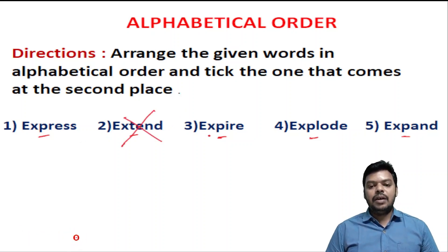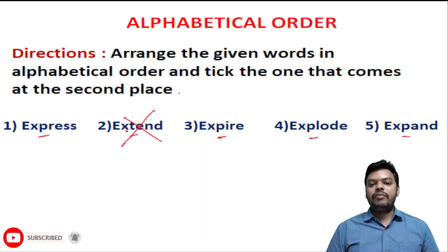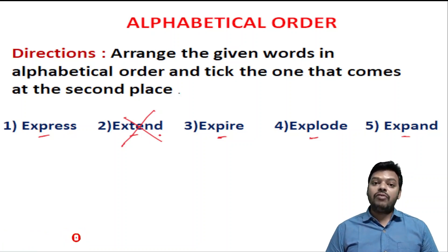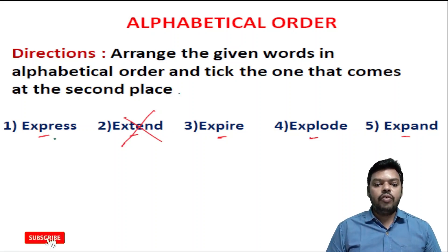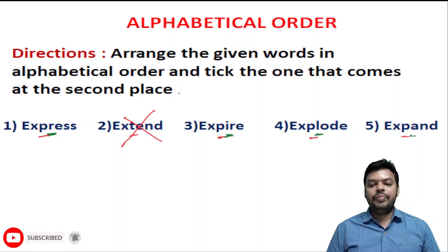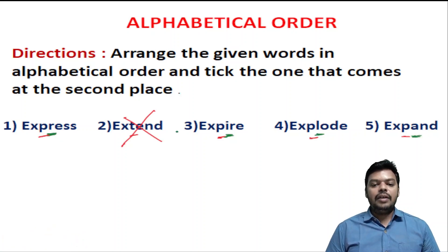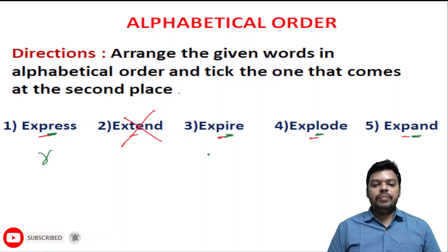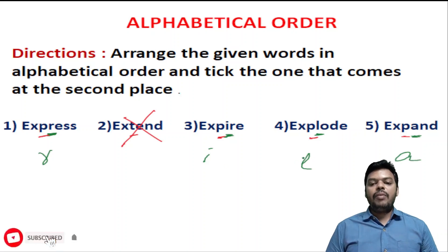The words are: expire, explode, and expand. The third alphabet is the same, so we check the fourth alphabet. The fourth letters are: first word R, second word I, third word L, fourth word A. Arranging R, I, L, A — A comes first alphabetically.